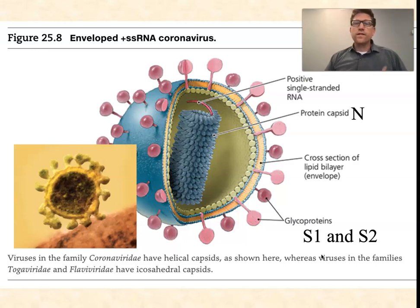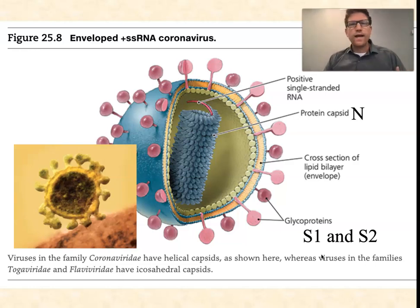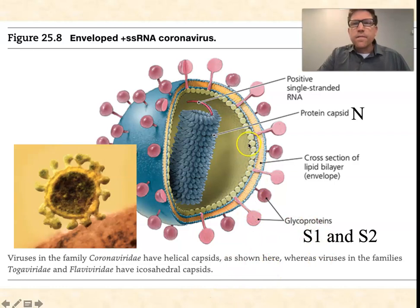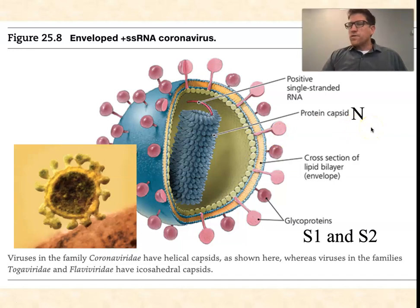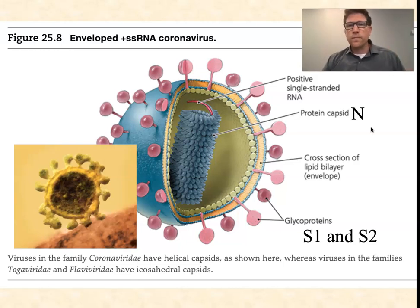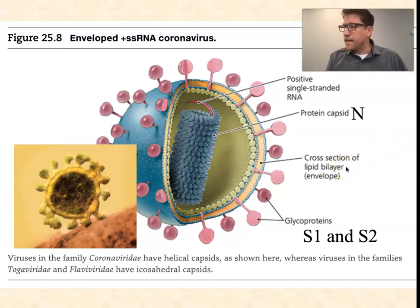Four of those proteins are structural: you've got the nucleocapsid, the two spike genes S1 and S2, and another structural protein — I think it's simply called protein M — which has something to do with the lining on the inside of the membrane. There's also an RNA replicase, which should make sense — RNA viruses have to bring their own RNA-dependent RNA polymerase because the human RNA polymerase can't read and replicate RNA for the virus. So they package their own, and that's one of the 20 genes and therefore one of the 20 proteins they make.